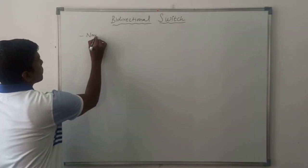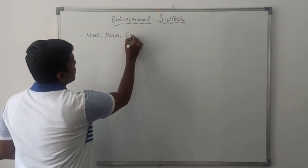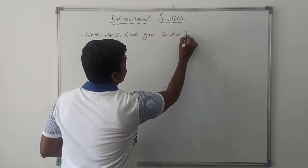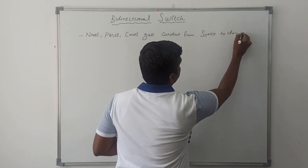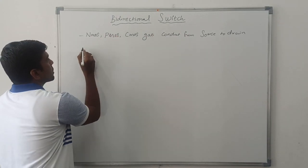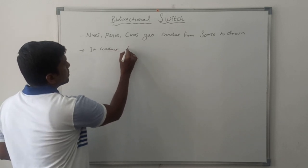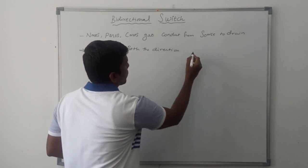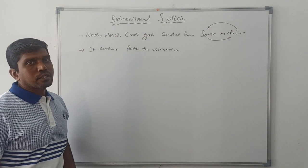In NMOS, PMOS, and CMOS, the gate conducts from source to drain. But a bi-directional switch conducts in both directions — from source to drain or drain to source. So it is called a bi-directional switch.